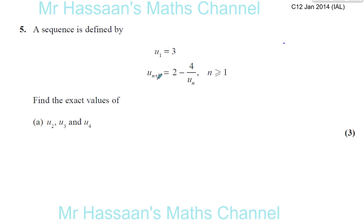So if I know the first term and I want to find the second term, well the second term is going to be 2 minus 4 over the first term. And the third term will be 2 minus 4 over the second term. So the second term is going to be 2 minus 4 over 3, which is 2 minus 1 and a third, which is 2 thirds.